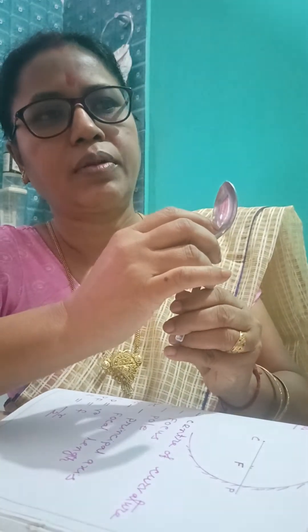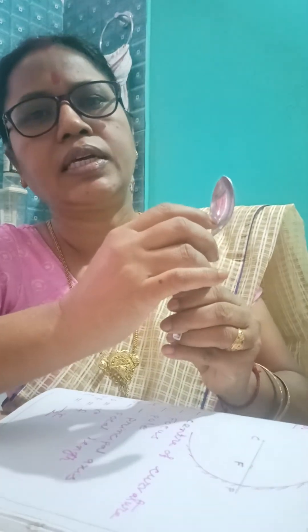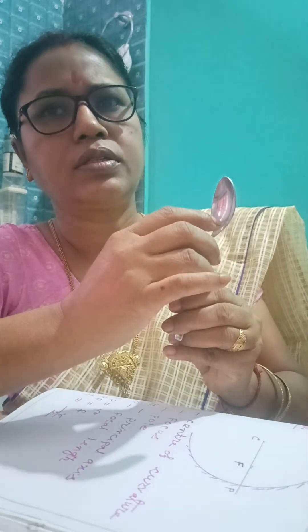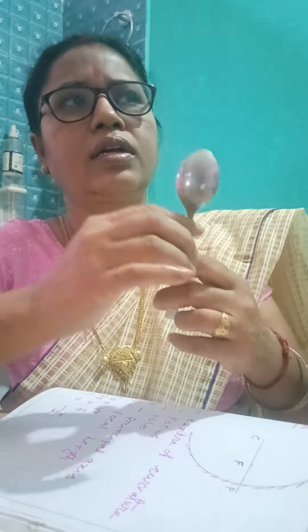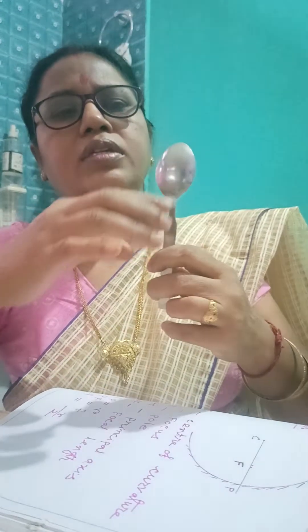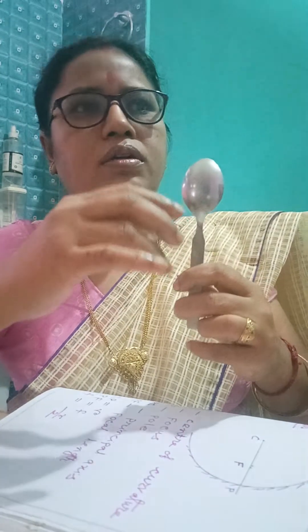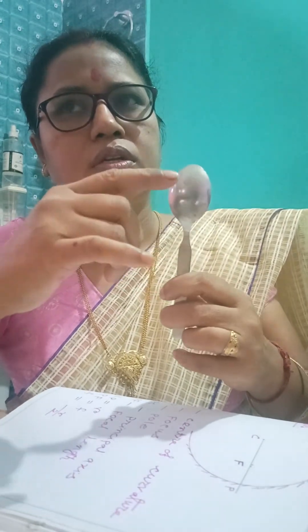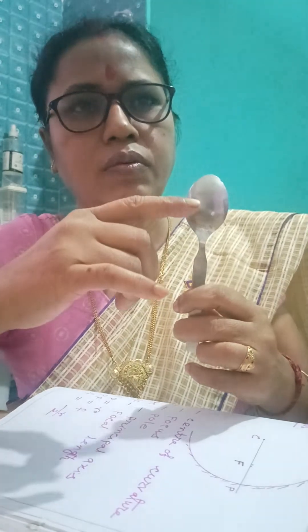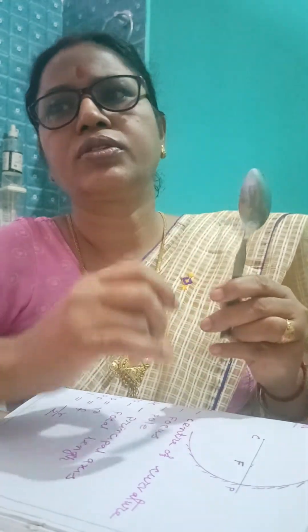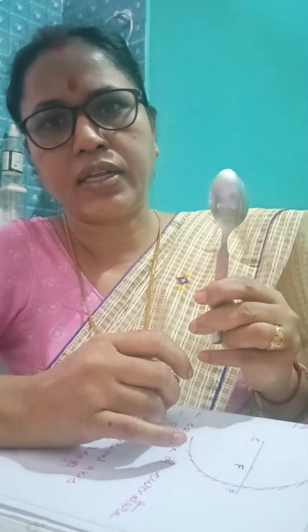The inner part of the spoon acts like a concave mirror, where the reflecting surface faces inward. In the case of a convex mirror, the outer part is the reflecting surface and the inner part is silvered.